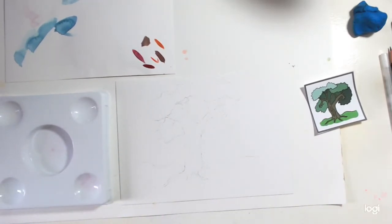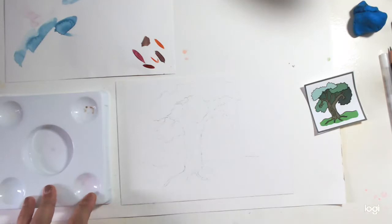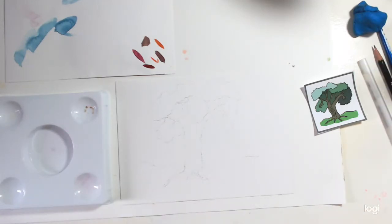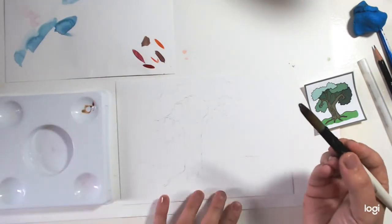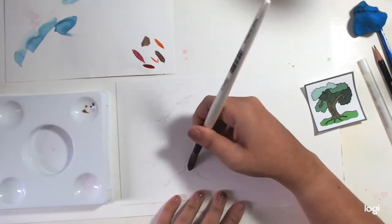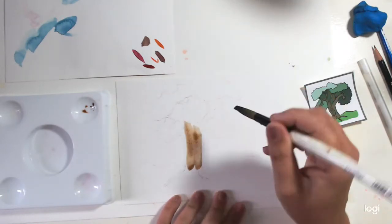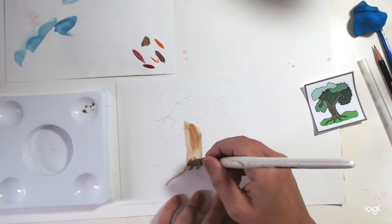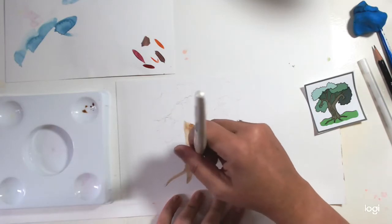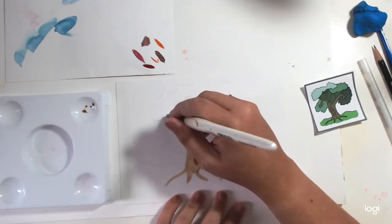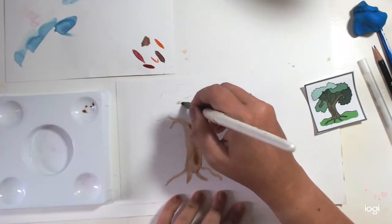I'm going to start with the trunk of the tree. I'm trying to find a nice brown that didn't lift up any paint. It's a very dark brown, but I've got lots of water on my brush. You can have really dark colors, but with watercolor you can make them a completely different shade by the amount of water you add.